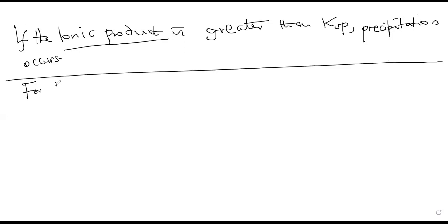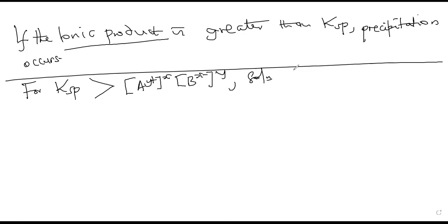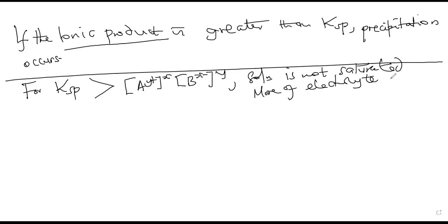To summarize: for Ksp, if Ksp is greater than the ionic product — where ionic product equals [A]^x · [B]^y — then the solution is not saturated, and more of the electrolyte dissolves. But if Ksp is less than the ionic product, then precipitation occurs.